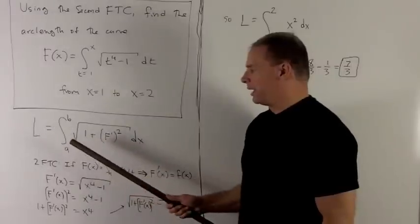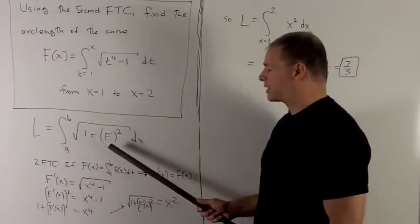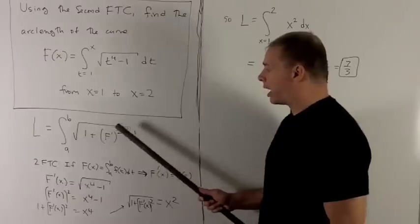Our arc length is going to be equal to the integral from a to b of the radical 1 plus f prime squared dx.